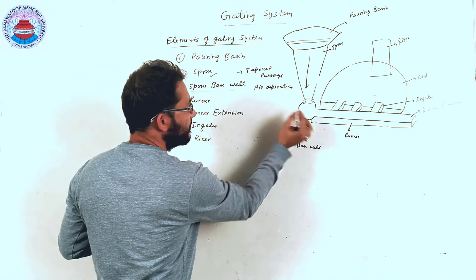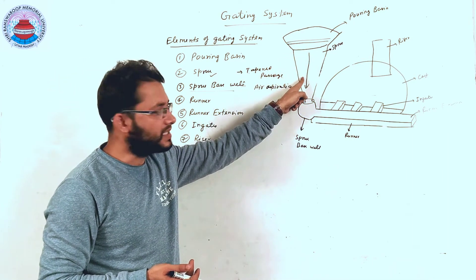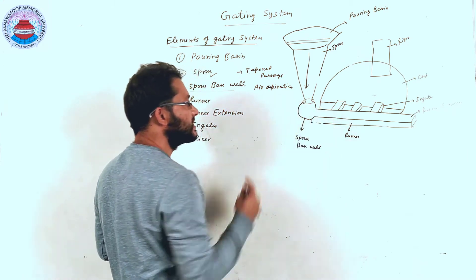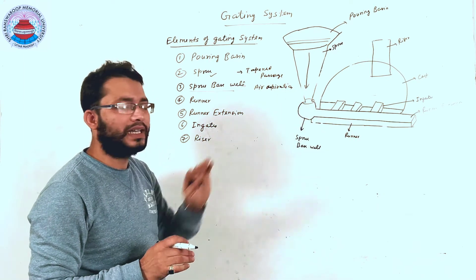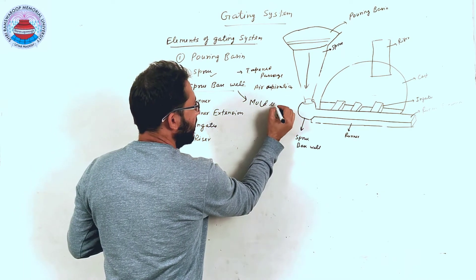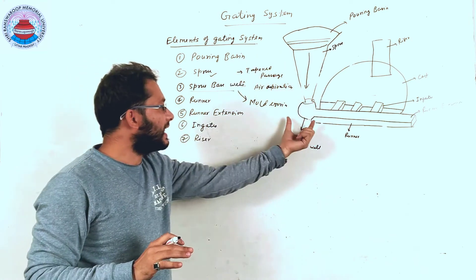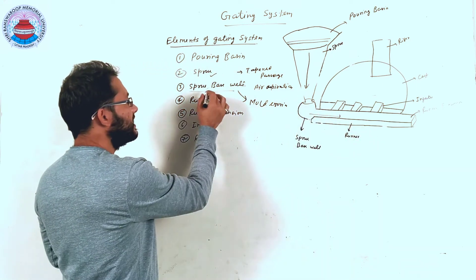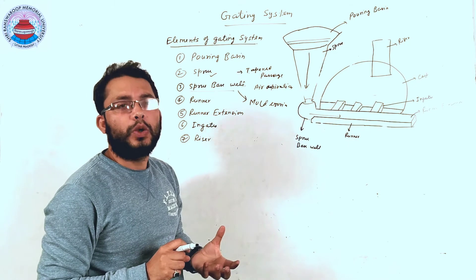The third element is the sprue base well. The purpose of a sprue base well is to prevent mold erosion — when molten material having high velocity and high temperature directly enters the mold cavity, it may cause mold erosion. The sprue base well is placed at the end of the sprue so that molten material is collected there first, avoiding mold erosion and providing a pathway for the molten material to enter into the runner.